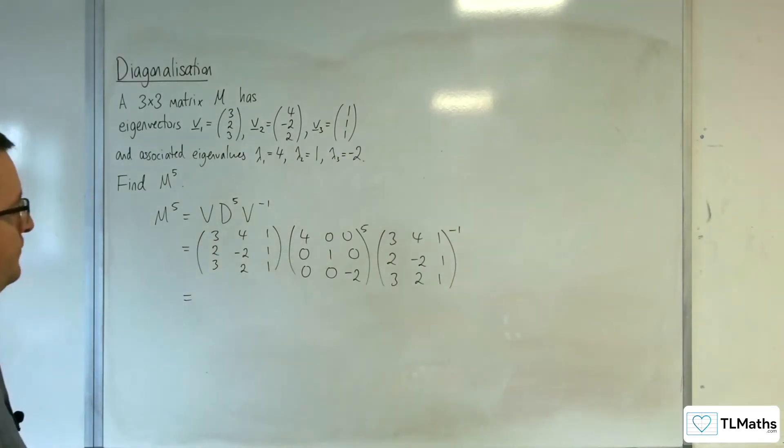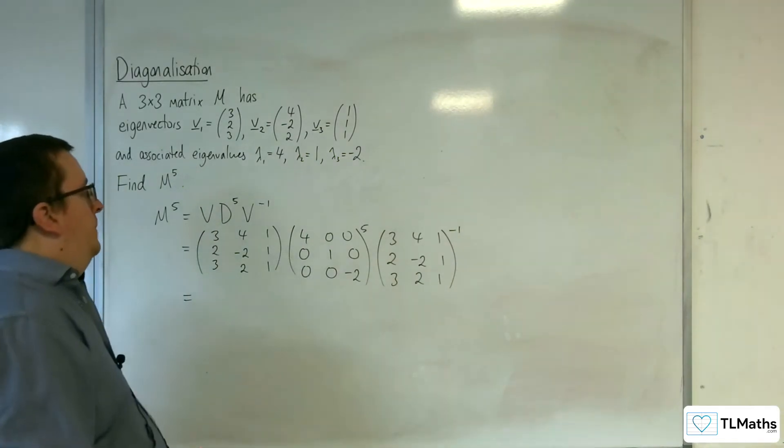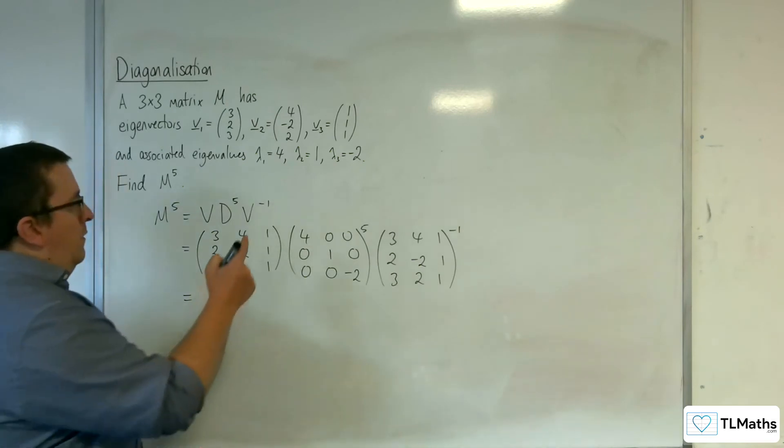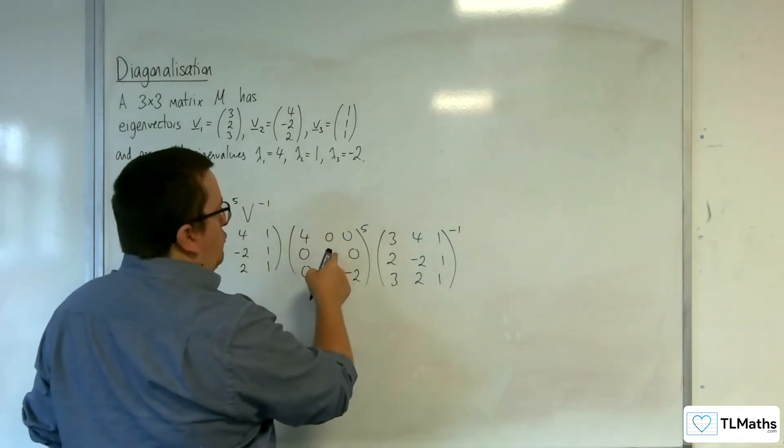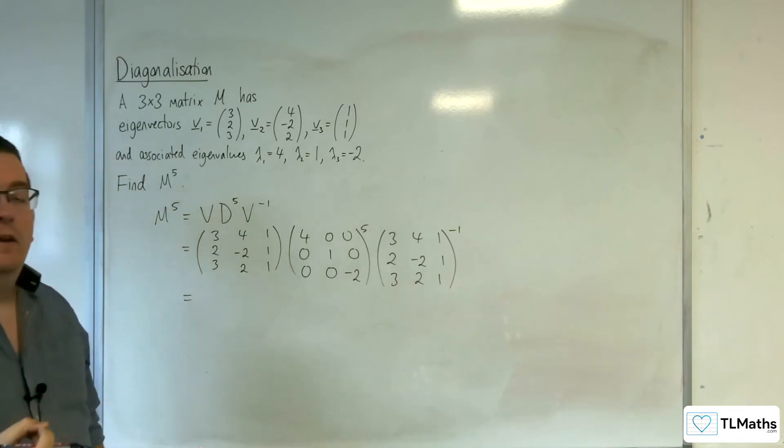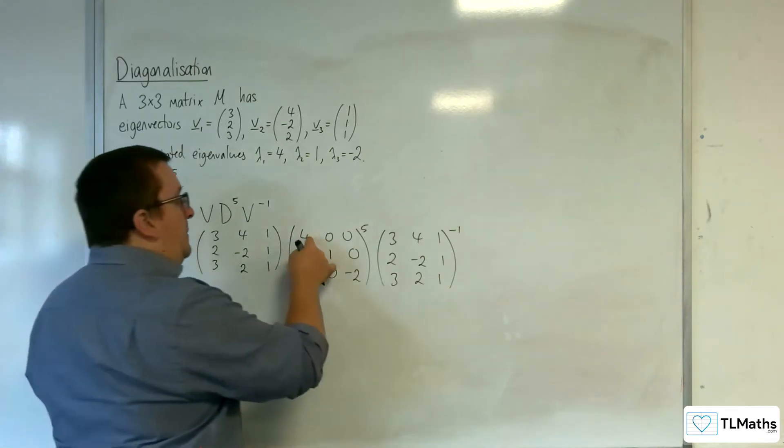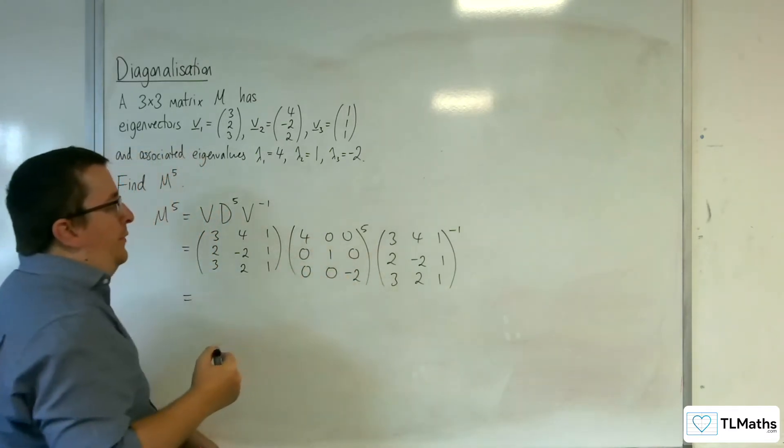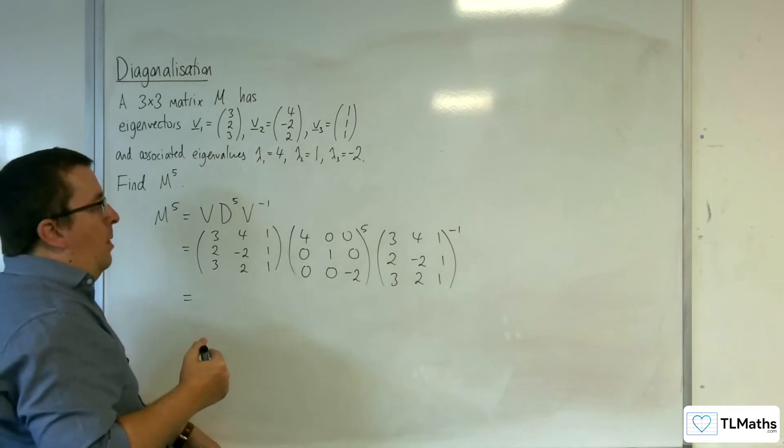Now because you've got this diagonal matrix to the power of 5, it's very easy to compute because it's just each of those terms inside to the power of 5.